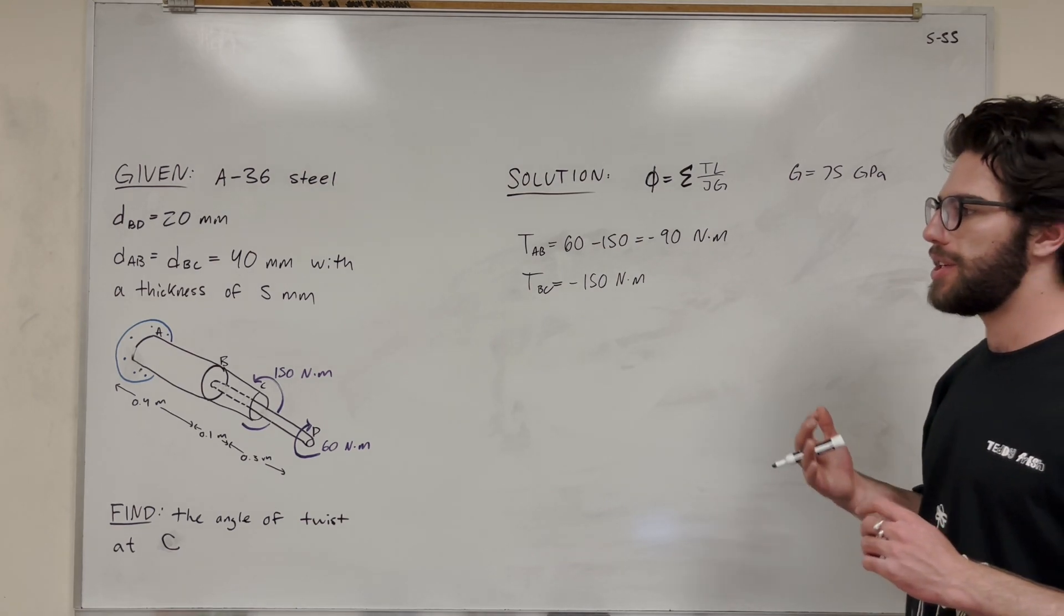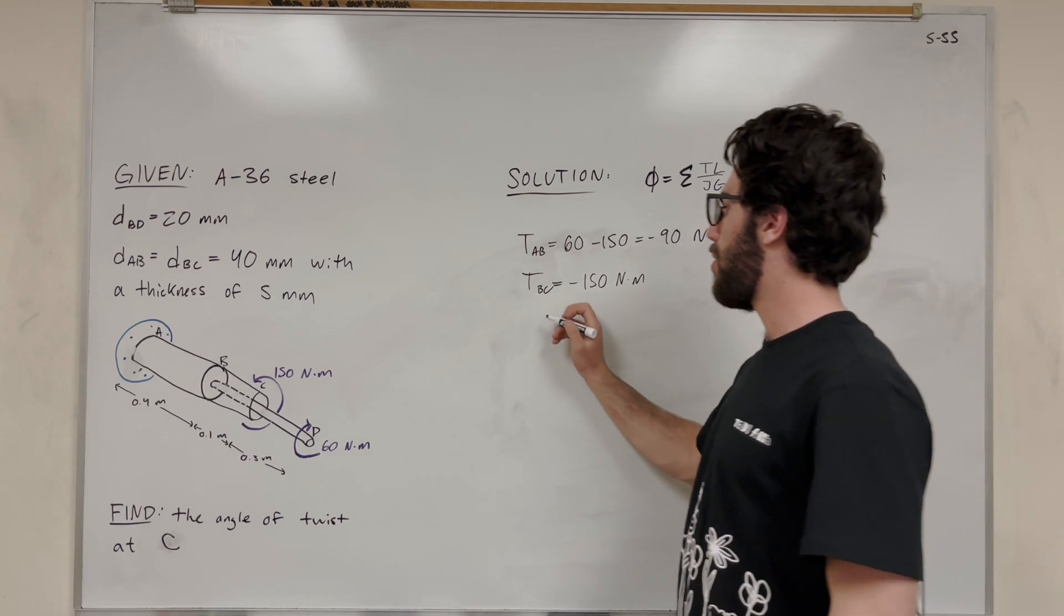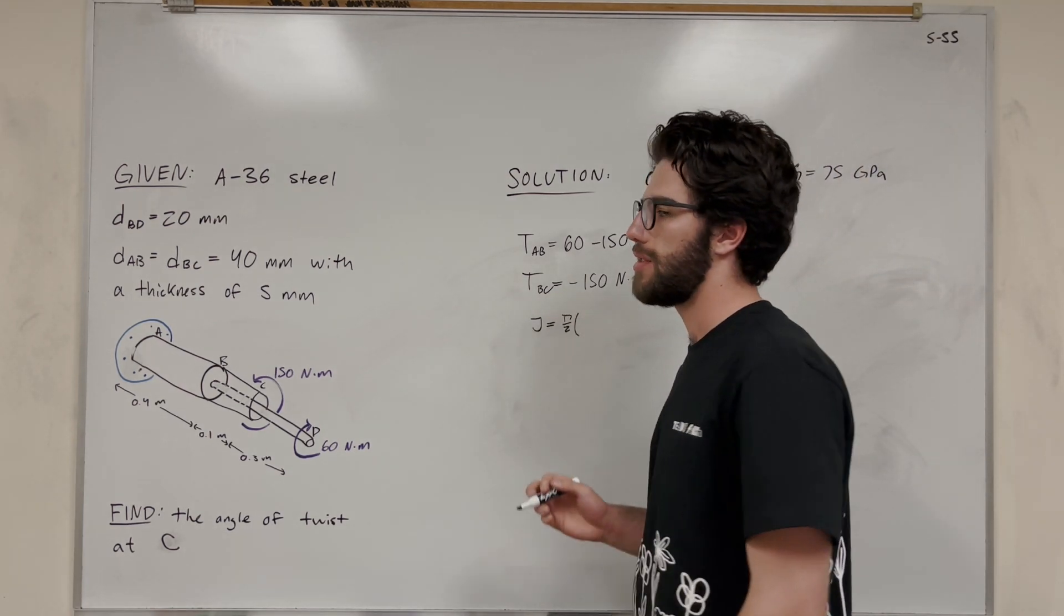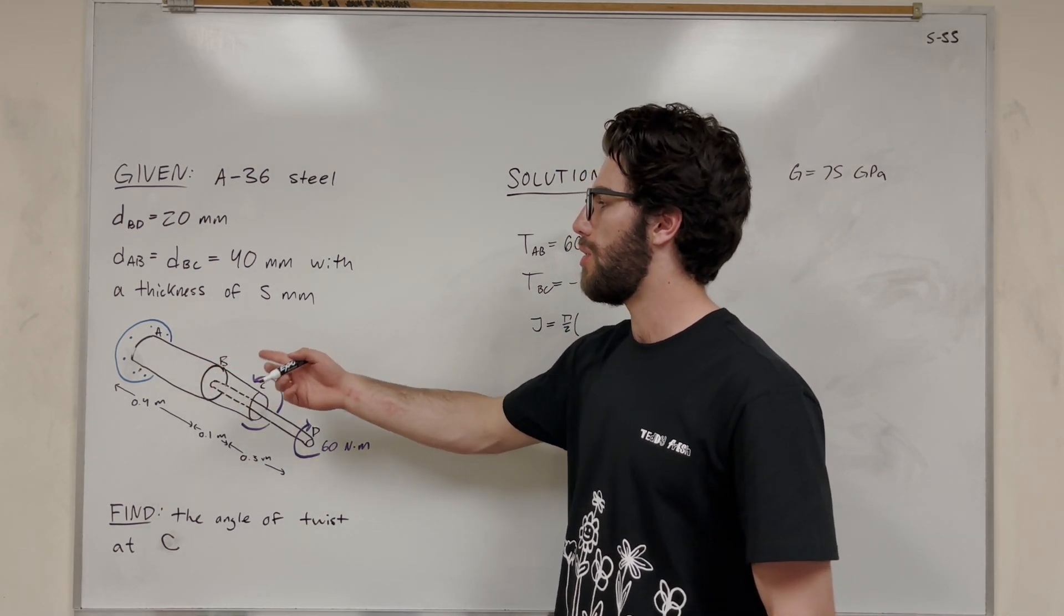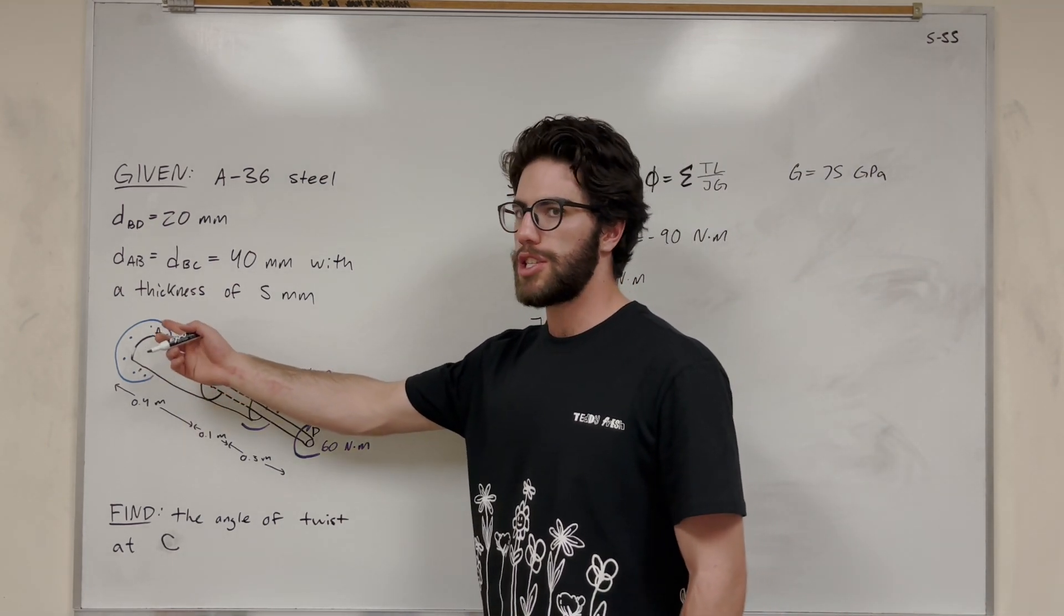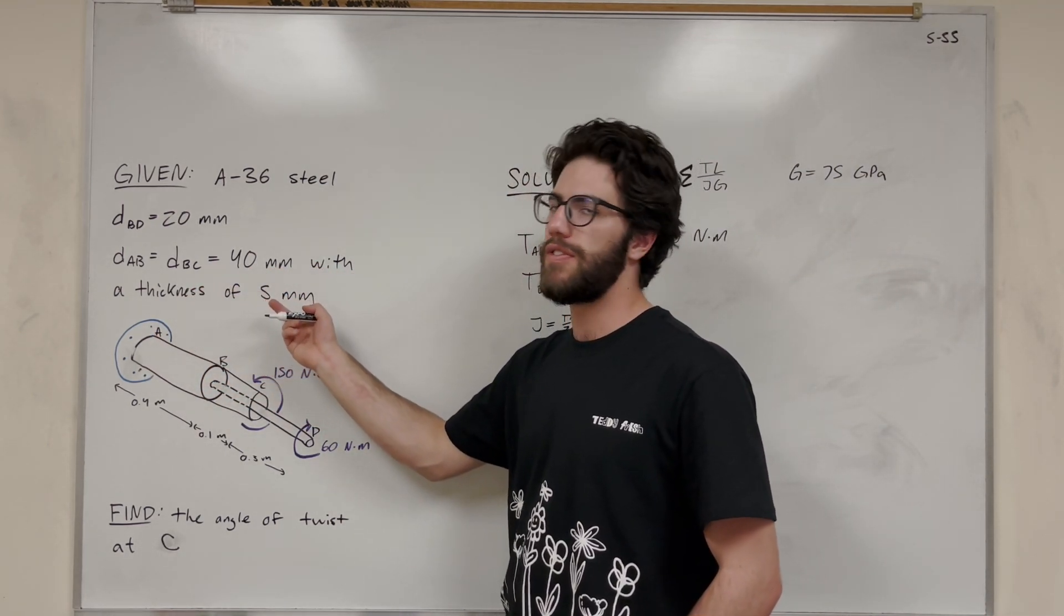So then what's left? All we need to do is find the polar moment of inertia, and then we can plug everything into our equation. Polar moment of inertia, the equation is equal to pi over 2, radius to the fourth. That being said though, we have a hollow rod from A to C, which AB and BC are both the same cross-section. It's a hollow rod, 40mm diameter but it has a thickness of 5mm.